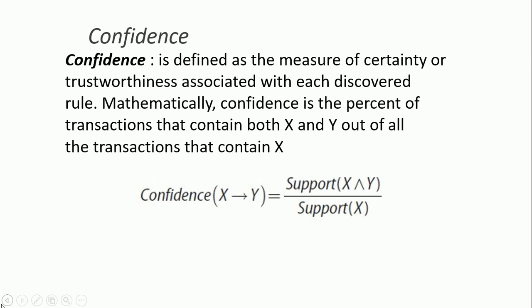Coming to confidence — it defines the measure of certainty or trust associated with each discovered rule. The confidence of X implies Y means the support of X intersection Y divided by the support of X. This tells us: what is the confidence that a customer will buy product Y if they buy product X? It is the support of customers buying both X and Y, divided by the support of X.